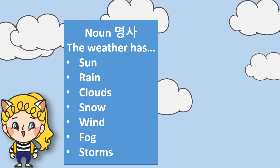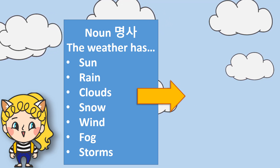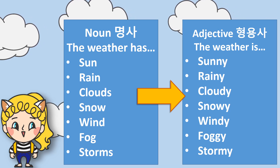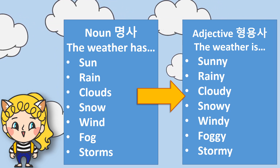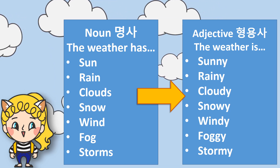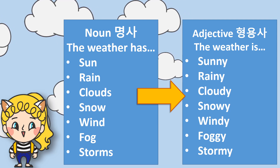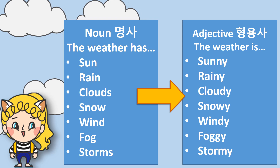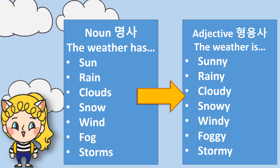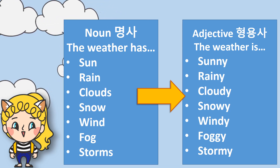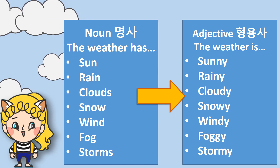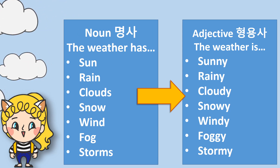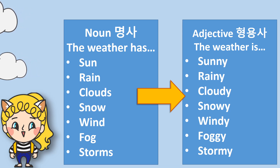These words are from nouns, and we change them to adjectives. So, if the weather has sun, rain, clouds, snow, wind, fog, or storms, we can say the weather is sunny, rainy, cloudy, snowy, windy, foggy, or stormy.